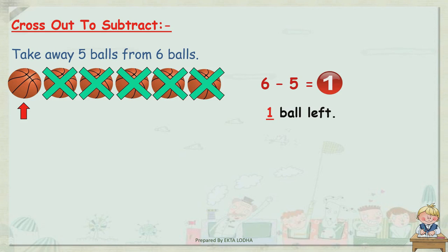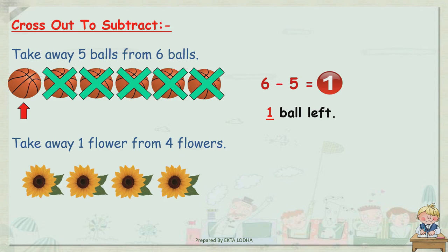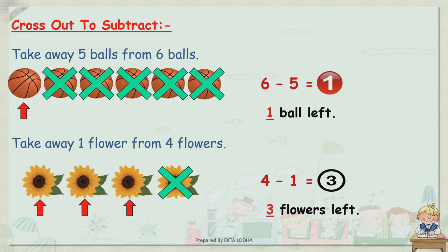Let's take another example. Take away 1 flower from 4 flowers. Total 4 flowers, and we have to take away 1 flower. So let's write: 4 minus 1 is equal to. Let's cross out 1 flower. How many are remaining? Let's count: 1, 2, 3. So our answer is 3. Three flowers left.